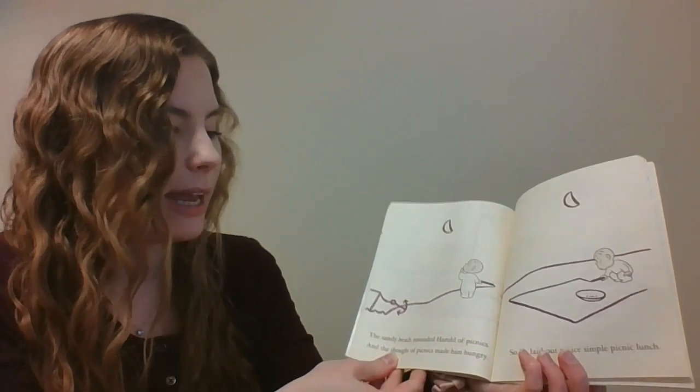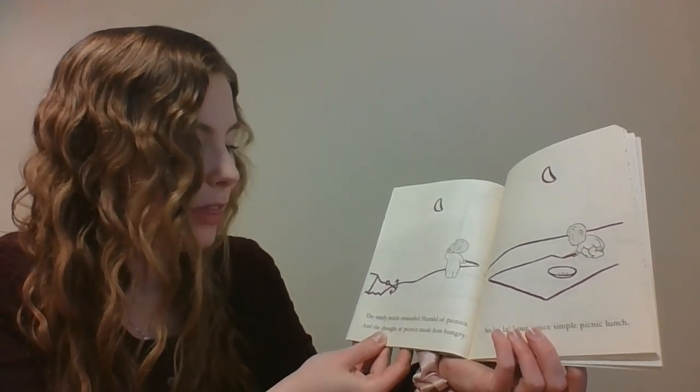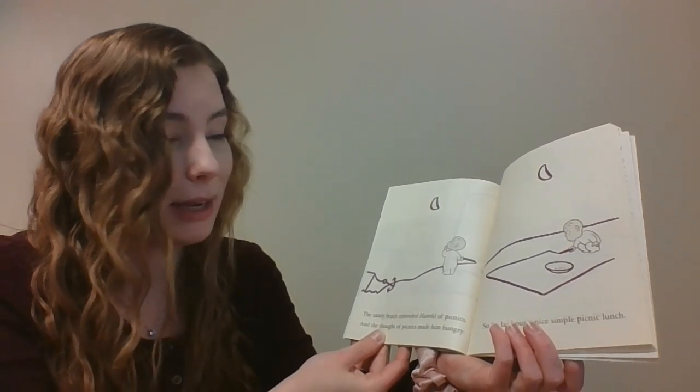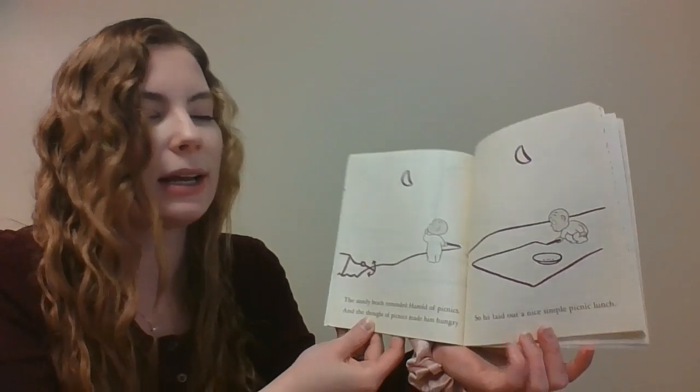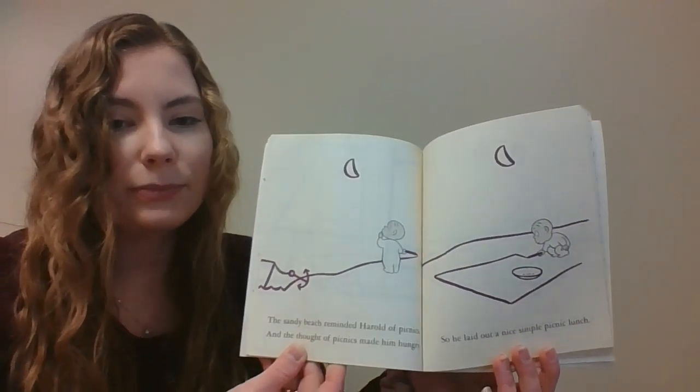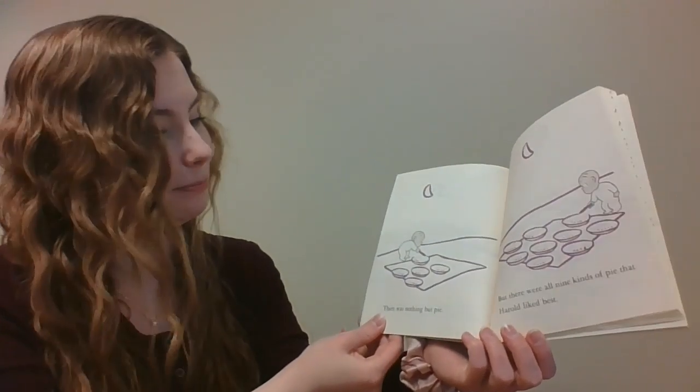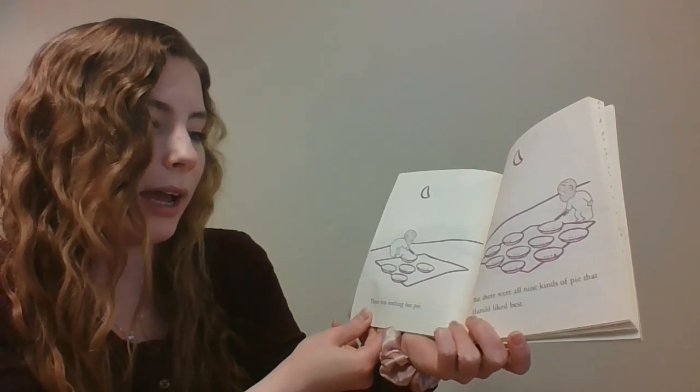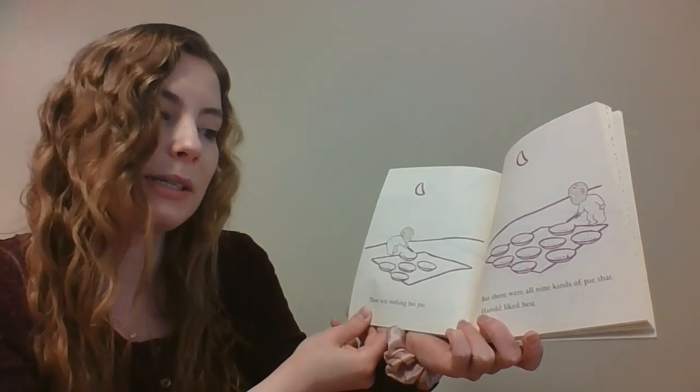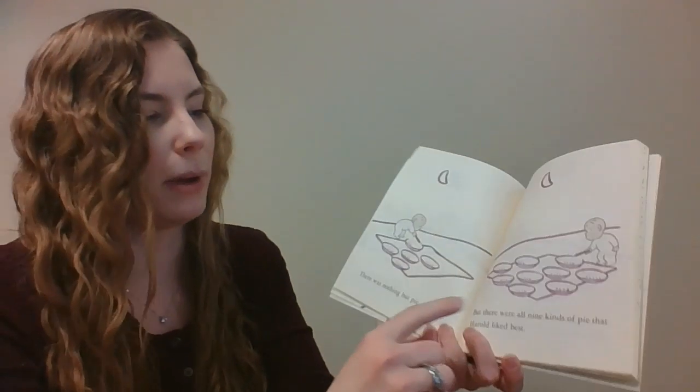The sandy beach reminded Harold of picnics, and the thought of picnics made him hungry. So he laid out a nice simple picnic lunch. There was nothing but pie. But there were all nine kinds of pie that Harold liked best. Let's see, count all the pies.